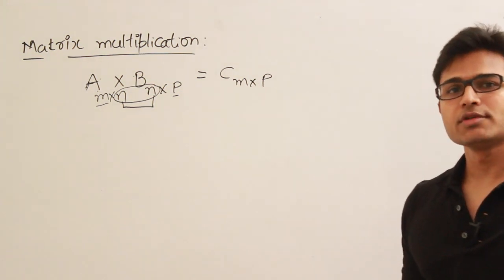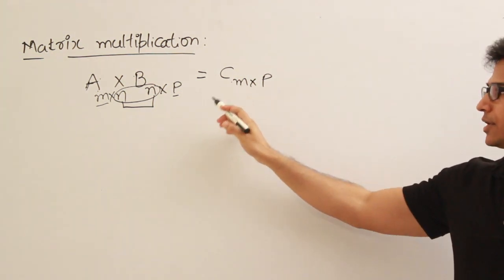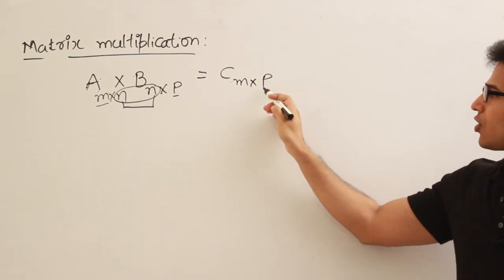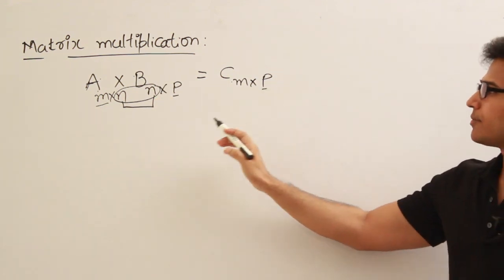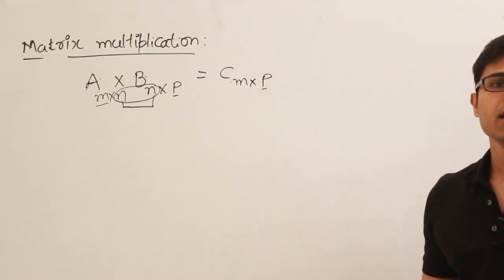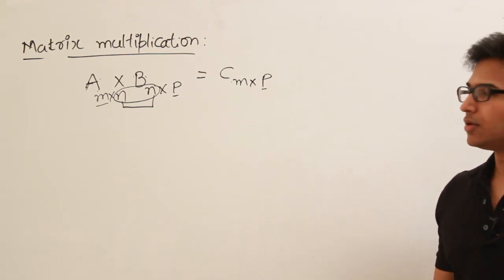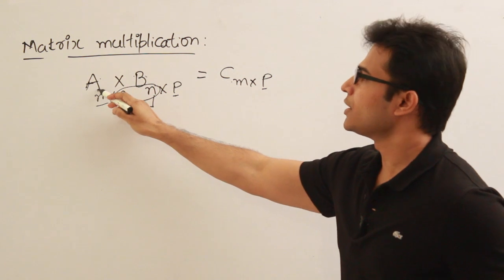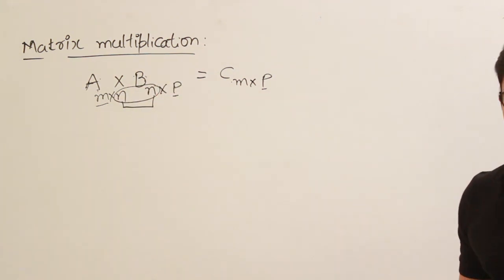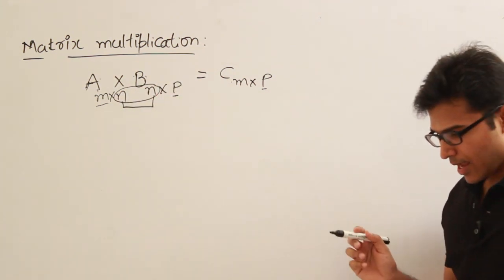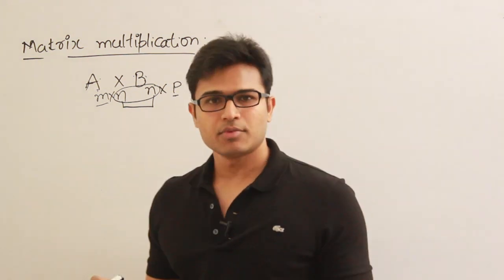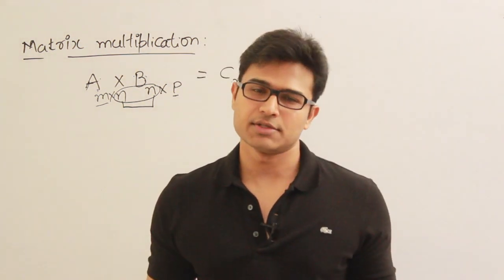The number of rows in the resulting matrix will be equal to the number of rows in A, and the number of columns in the resulting matrix will be equal to the number of columns in B. This multiplication is possible only when the number of columns in A equals the number of rows in B. I will take an example and show you how the multiplication is done.